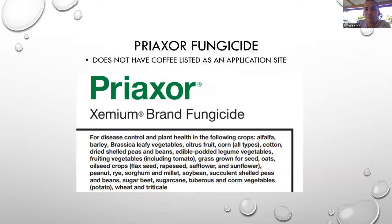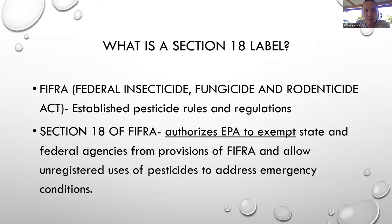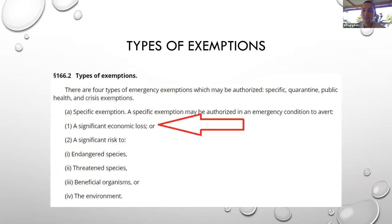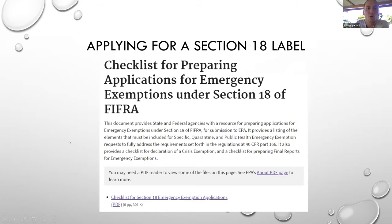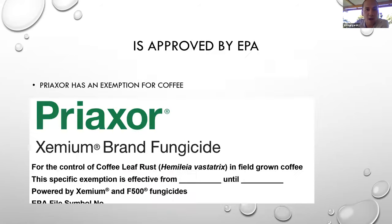Pryaxor originally does not have coffee as an application site. So how can we use it? We've applied for and received approval for what is called a Section 18 label. Section 18 of FIFRA authorizes EPA to exempt state and federal agencies from FIFRA provisions and allow unregistered uses of pesticides to address emergency conditions. We're operating under the significant economic loss provision. There's a process online you can check out, but the main thing is we got the Section 18 approved and now have an exemption for coffee.